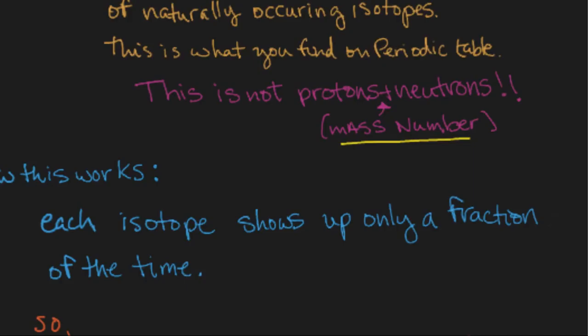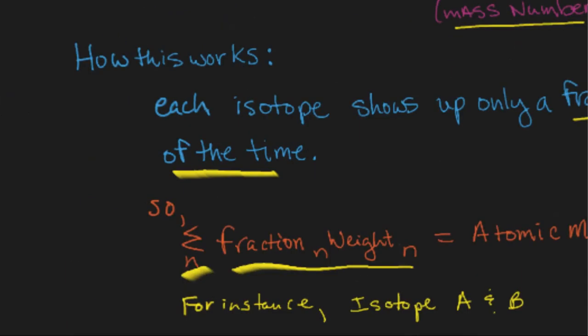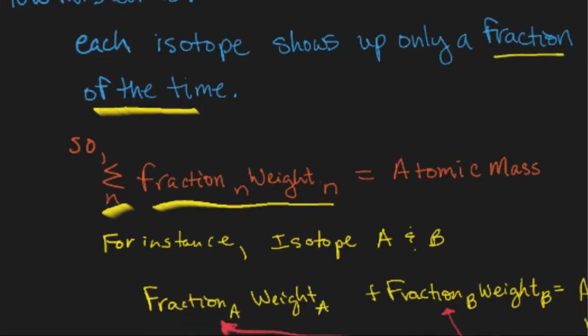How does this work? What's the concept? The isotopes, like I said, only show up a fraction of the time in each sample of carbon or whatever we're discussing. So, the basic formula is the summation of the fraction that it occurs out in nature, or this could be a percentage as well, times the weight of each one of those added together is going to give us that average atomic mass.